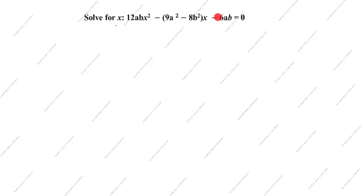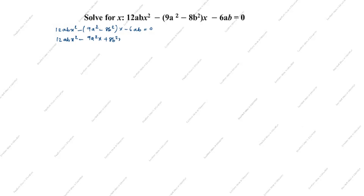The given question is: 12abx² minus open bracket 9a² minus 8b² close bracket x minus 6ab equals 0. The next step is to remove this bracket: 12abx² minus 9a²x, and minus into minus gives plus, so plus 8b²x minus 6ab equals 0.